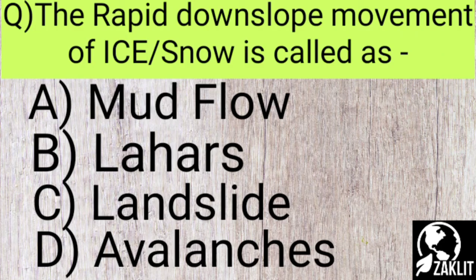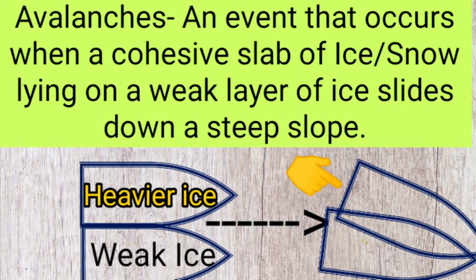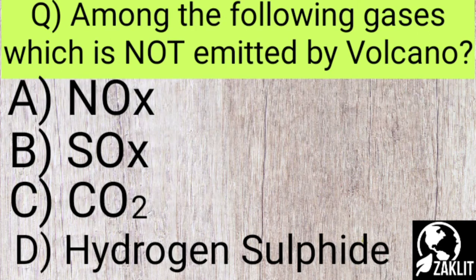The next question is: the rapid downslope movement of ice or snow is called what? The options are mudflow, landslide, or avalanche. The correct option is option D — avalanche. Avalanches occur when a cohesive slab of ice or snow lying on a weaker layer of ice or snow slides down a steep slope. When a larger, heavier sheet of ice cannot hold its mass and strength, it slides down — that is an avalanche.